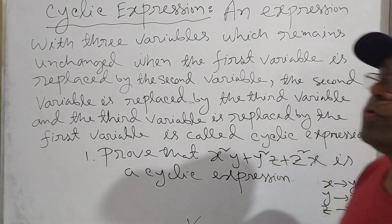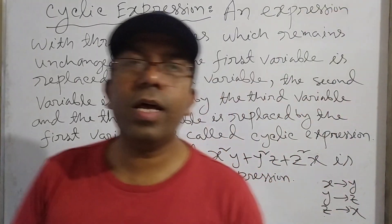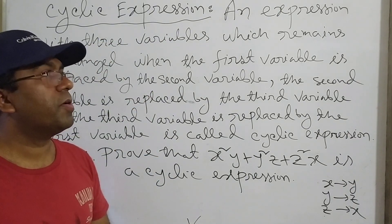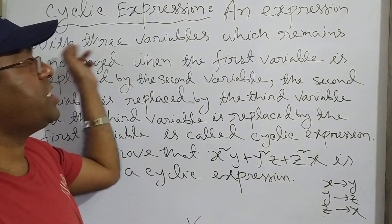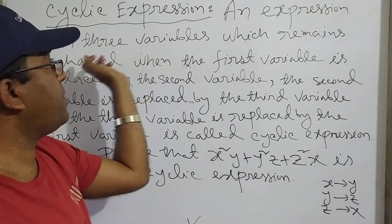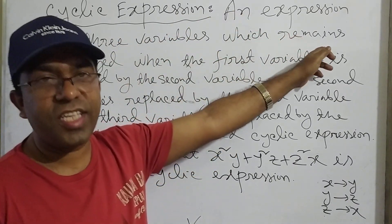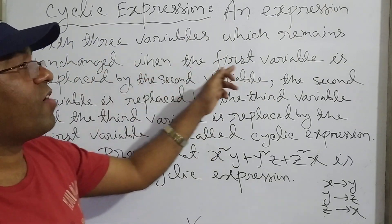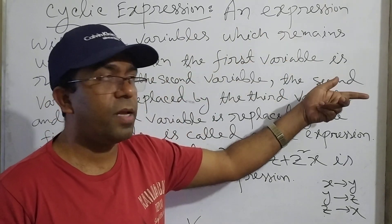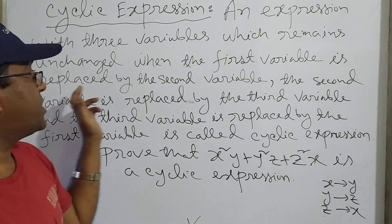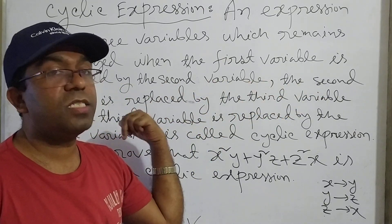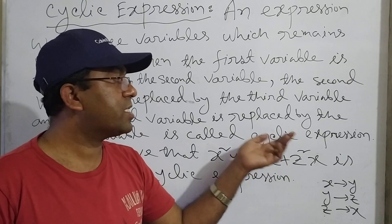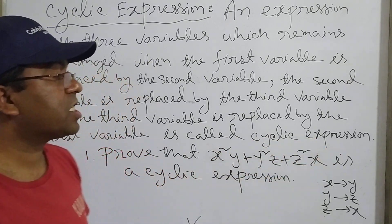Dear student, today we learned about cyclic expression. An expression with three variables which remains unchanged when the first variable is replaced by the second variable, the second variable is replaced by the third variable, and the third variable is replaced by the first variable, is called a cyclic expression.